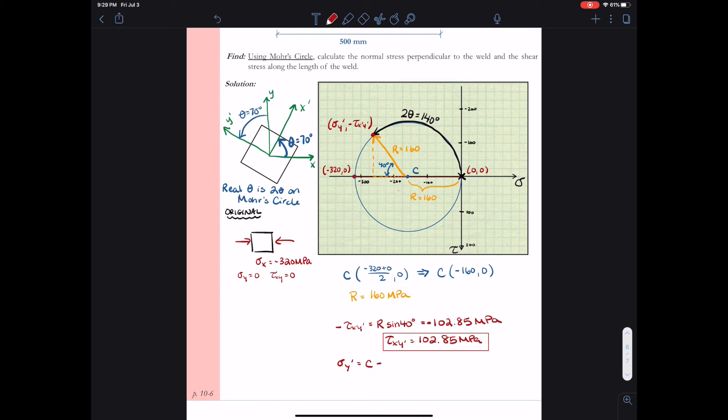Next, I want to solve for sigma y prime. Sigma y prime is the distance to the center minus an additional r cosine 40. The center is minus 160 comma 0. So minus 160 minus 160 cosine 40 gives me the final coordinate point of sigma y prime: negative 282.57 MPa.